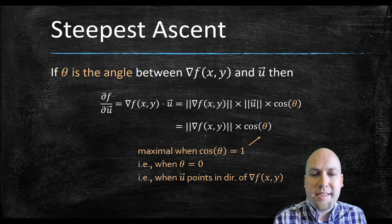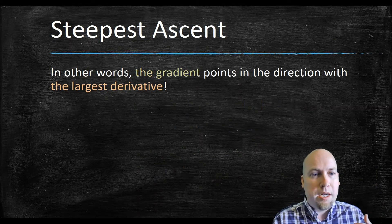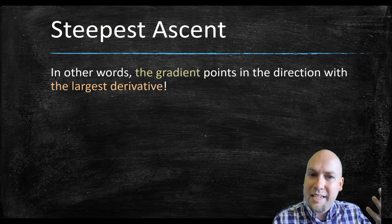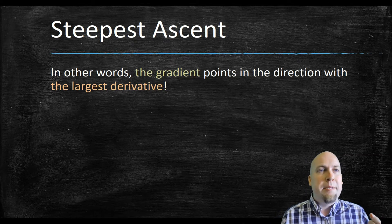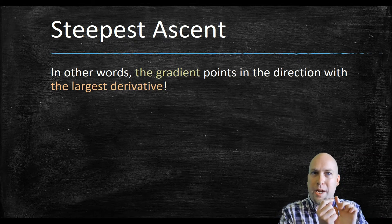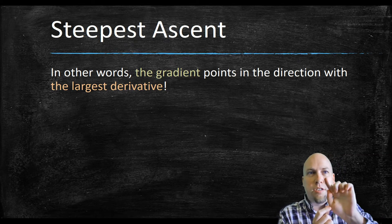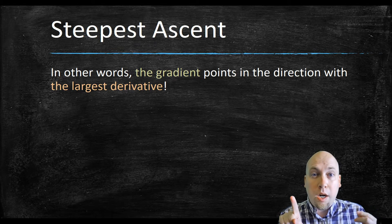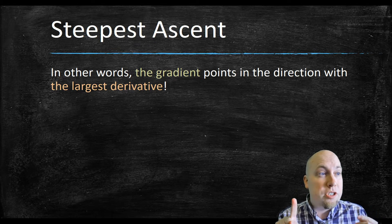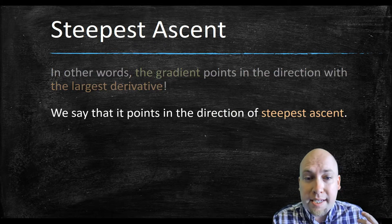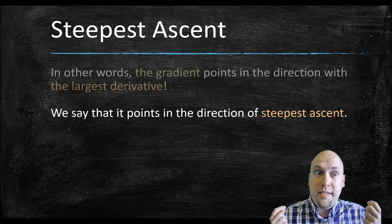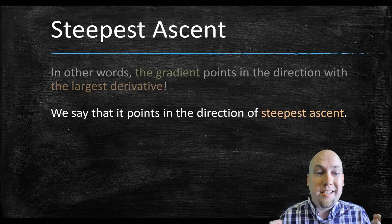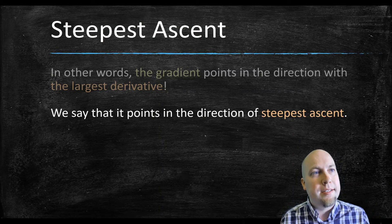Going back to our original problem, this tells us that the direction of steepest ascent — the way to increase your function as quickly as possible — is to walk in the direction of the gradient. The gradient points in the direction that has the largest derivative; in other words, the gradient points in the direction of steepest ascent.